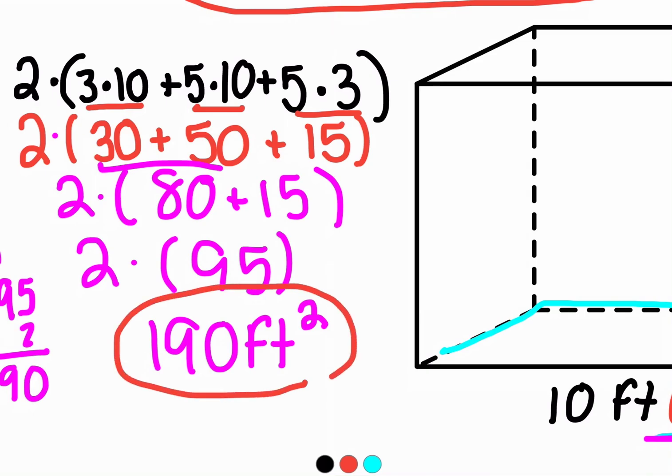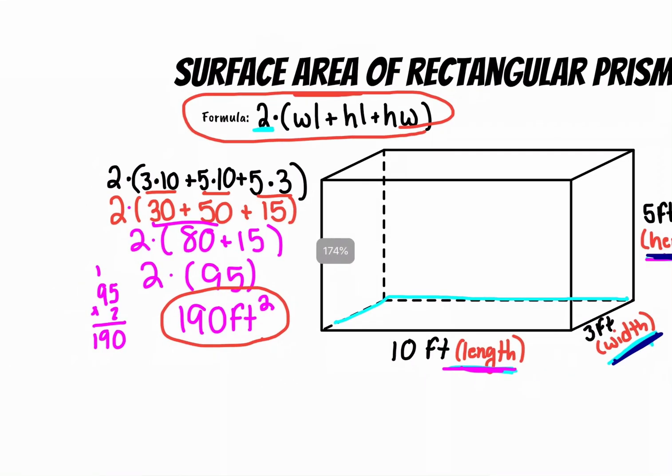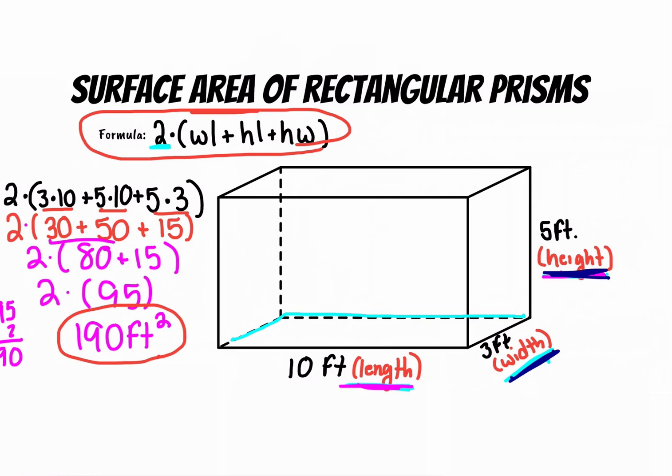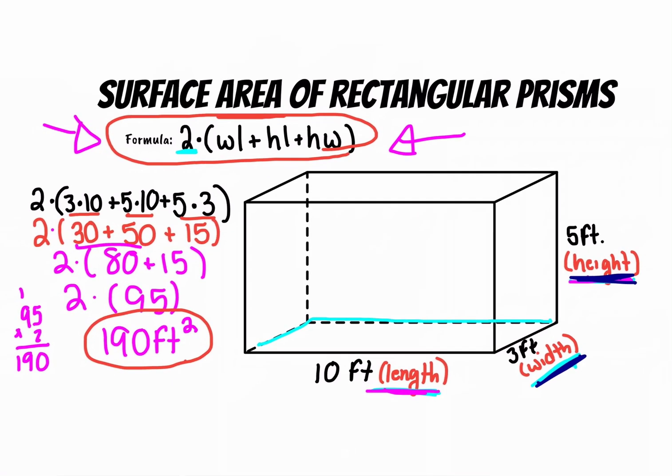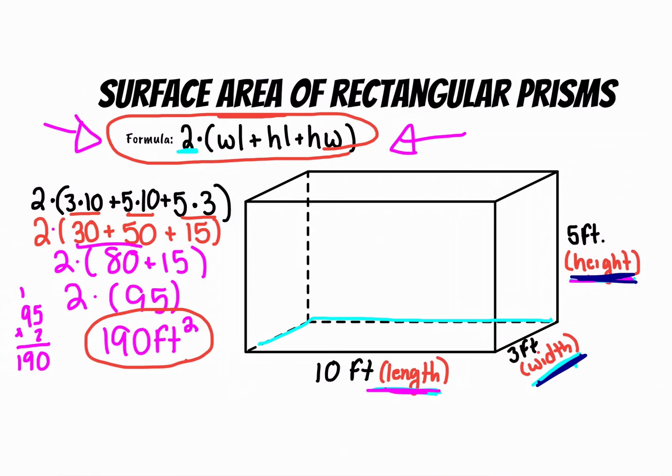So that is how and why you can calculate the surface area of a rectangular prism using the formula. If you don't get anything else out of this, what I would ask you to do is at least screenshot or remember this formula, because it'll help you work out any surface area of rectangular prisms. Thanks for watching. Make sure to like and follow.